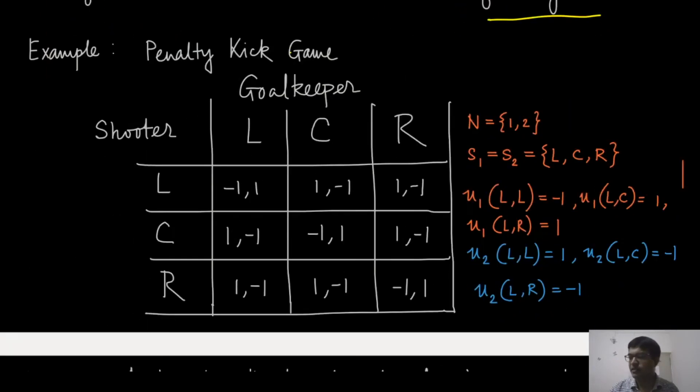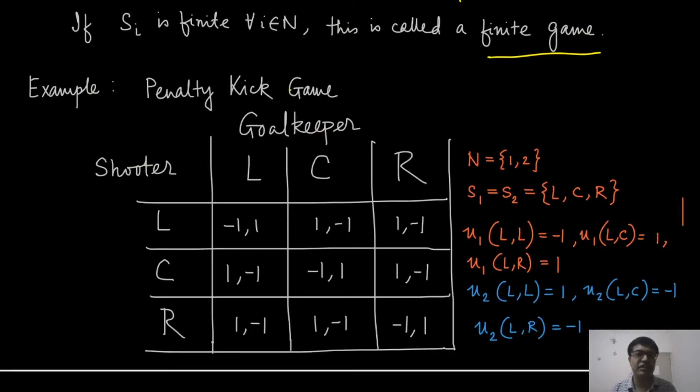Let us look at a very simple example of a game - the usual penalty kick game. In the context of football, you have a shooter who is shooting to the net and the goalkeeper is trying to save it. Suppose the shooter has three options: shoot on the left, in the center, or on the right. Similarly, the goalkeeper can dive on the left, stay at the center, or dive on the right. If the shooter shoots to the left and goalkeeper also jumps to the left, then the goalkeeper saves the goal. In that case, the shooter gets a negative payoff and the goalkeeper gets one because it has saved the goal.